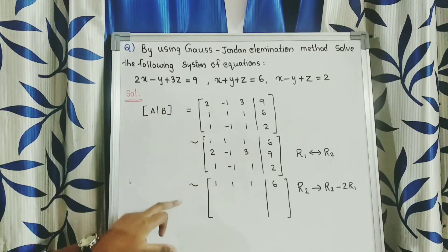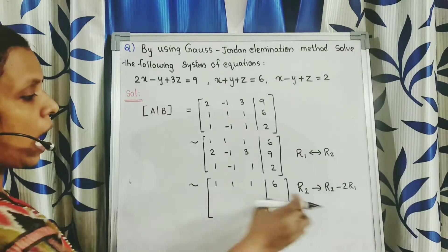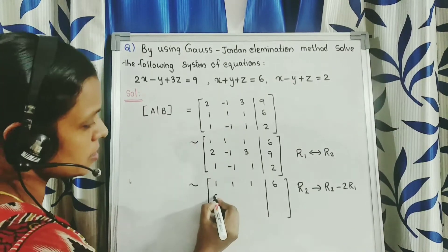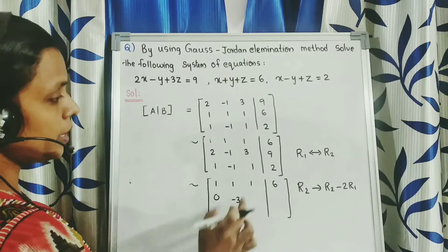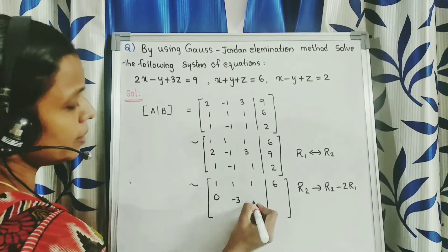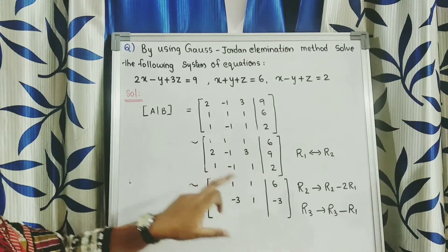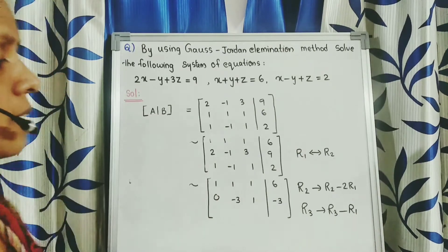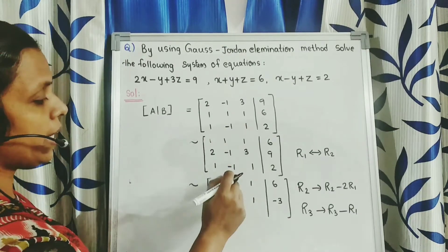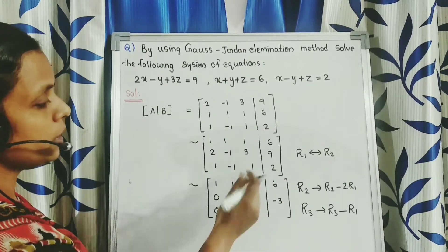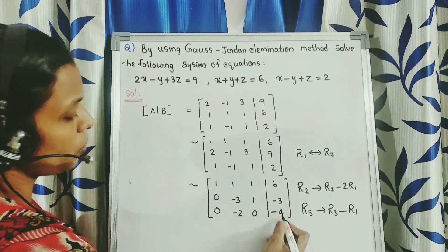To convert the 2 in A11 position to 0, we apply the transformation R2 tends to R2 minus 2R1. We get: 2 minus 2 is 0, negative 1 minus 2 is negative 3, 3 minus 2 is 1, 9 minus 12 is negative 3. Next we convert the 1 in A31 to 0 using R3 tends to R3 minus R1. We get: 1 minus 1 is 0, negative 1 minus 1 is negative 2, 1 minus 1 is 0, 2 minus 6 is minus 4.